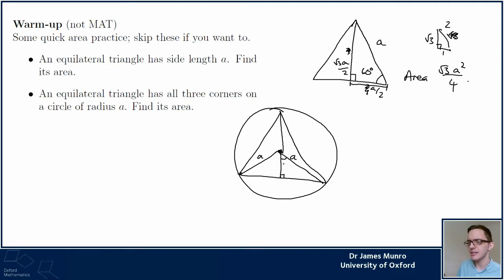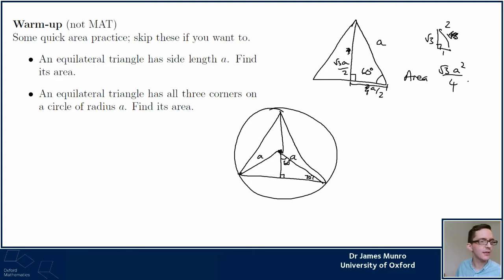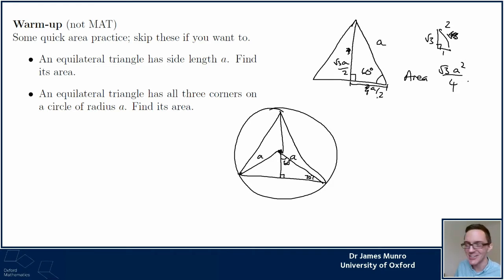This is 60 degrees because the other angle is 30 degrees. Do I know the bottom is a/2? Yes - people in chat spotted it quickly - the bottom is a/2 in this one. Quicker argument: because it's an equilateral triangle, this is half of one of the sides.